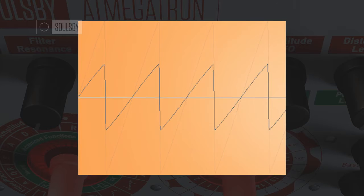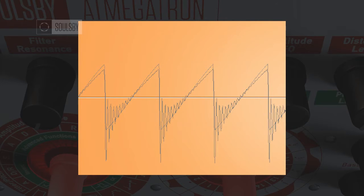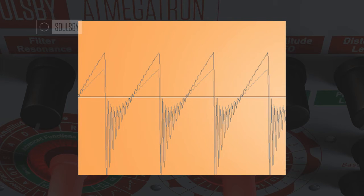Turning on filter normalise mode reduces the waveform amplitude entering the filter. The waveform is then filtered and normalised at the output so as to restore it to a full-amplitude waveform again.